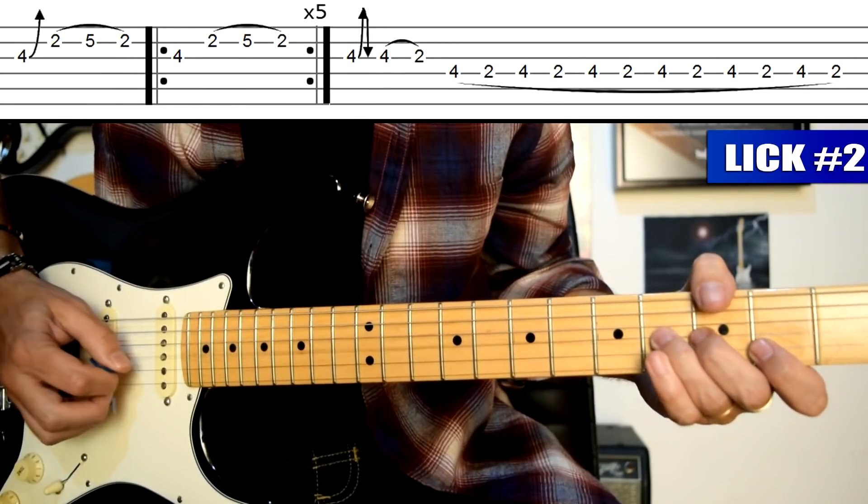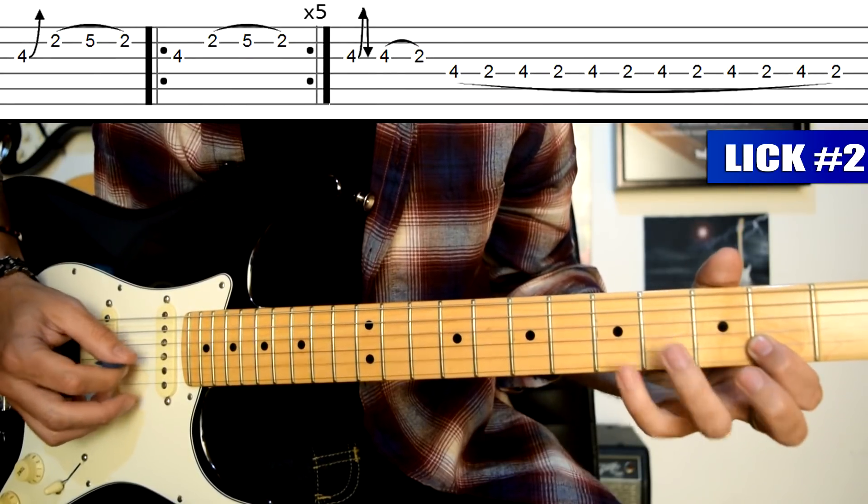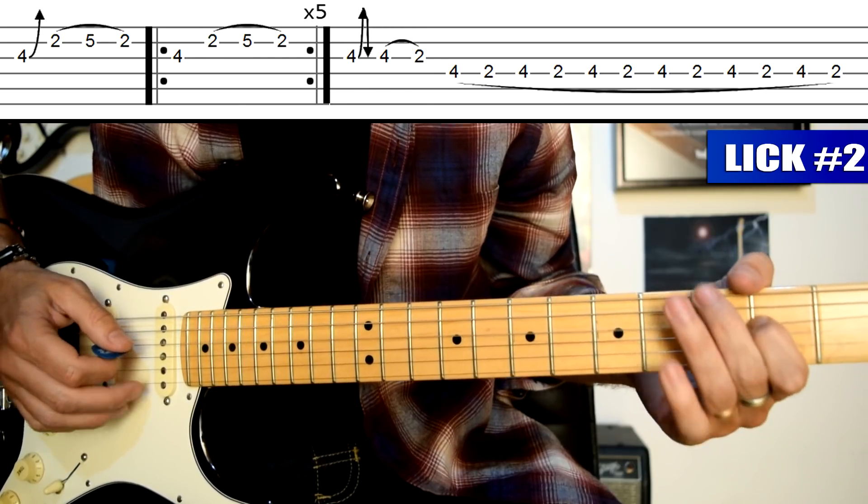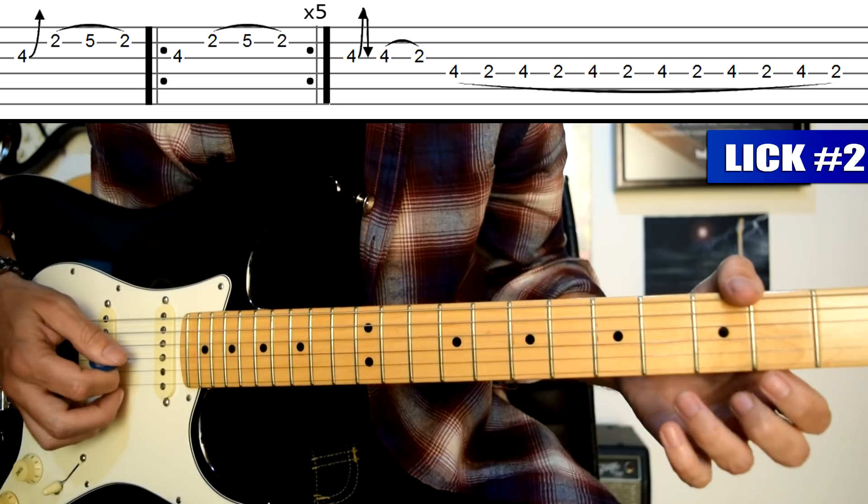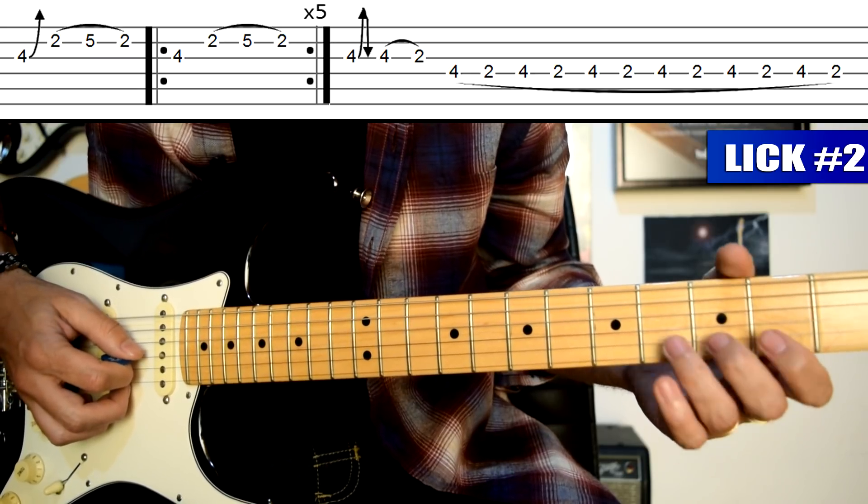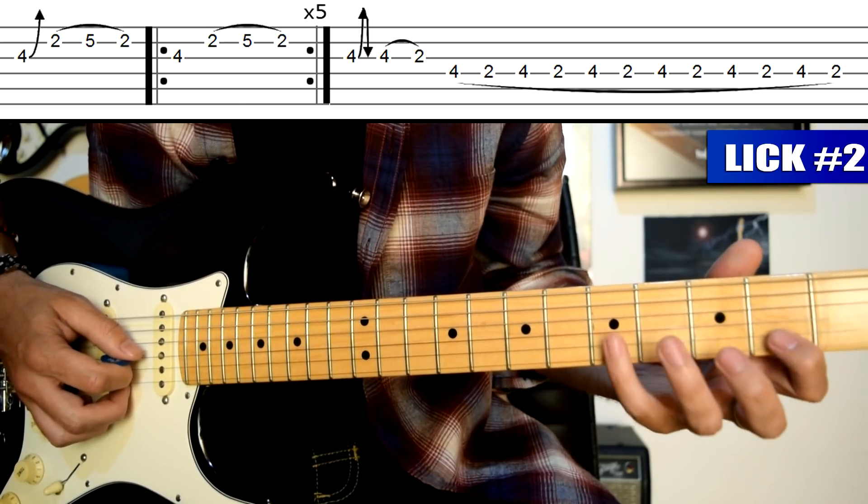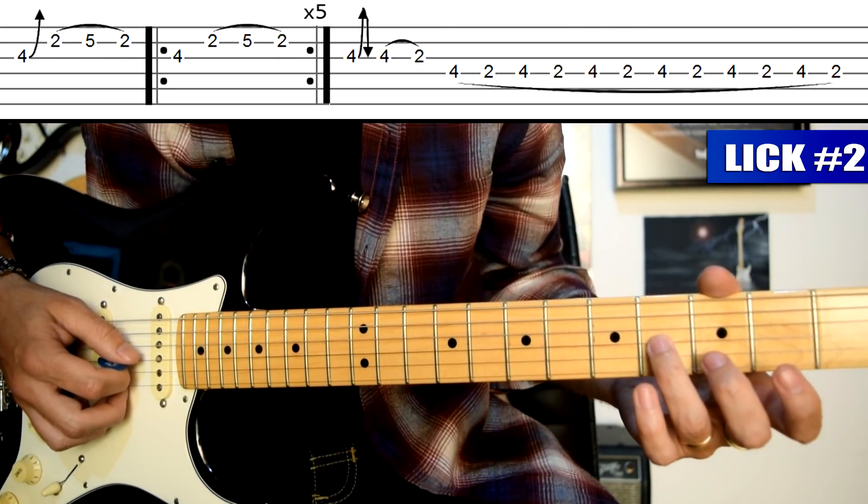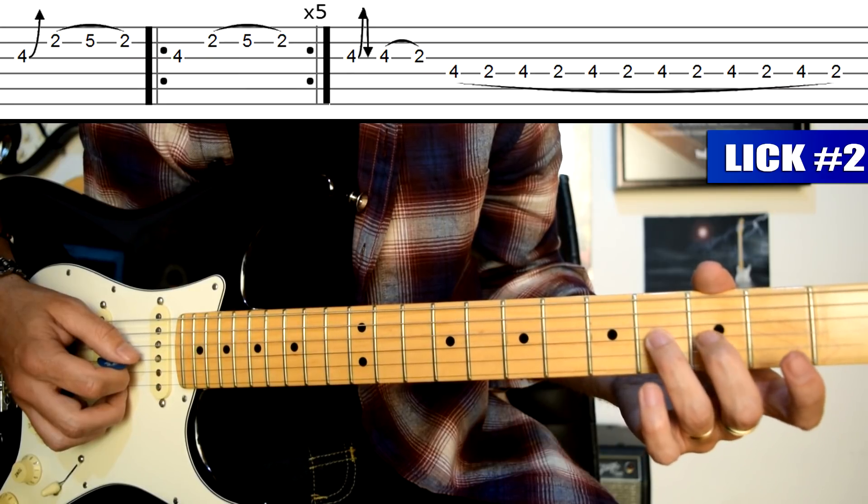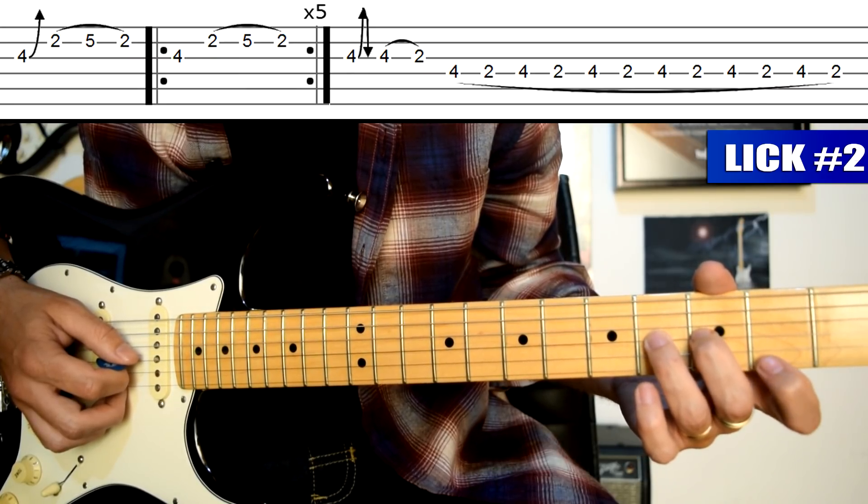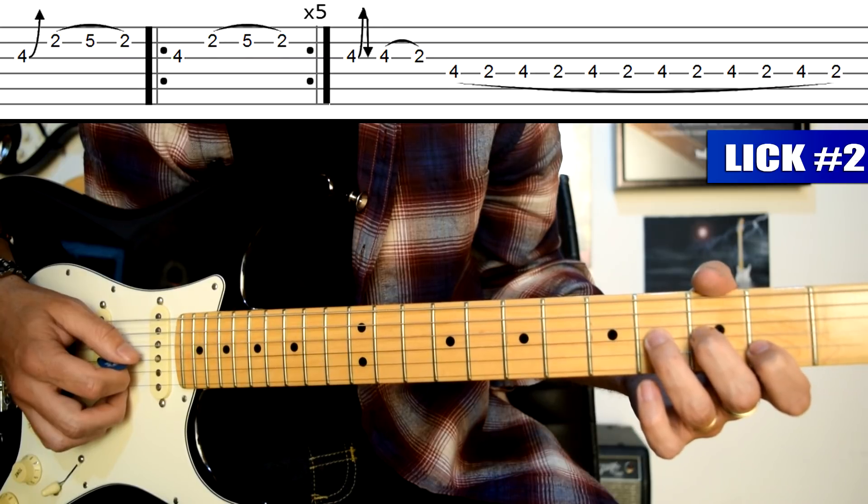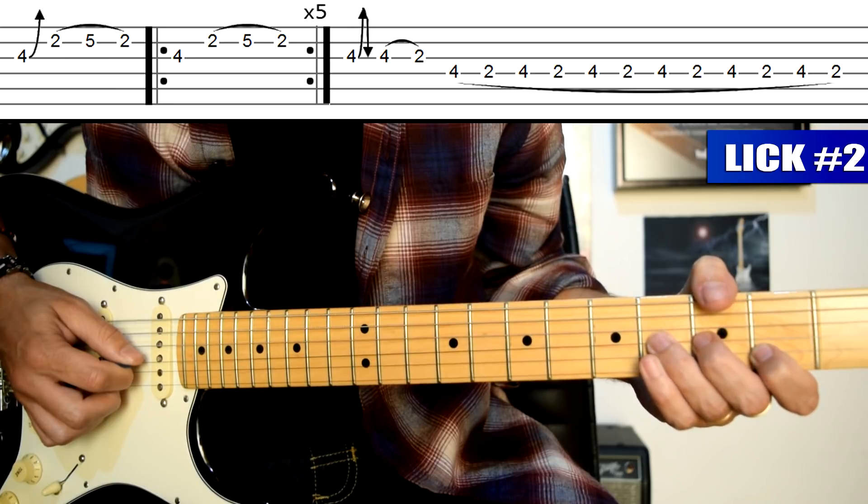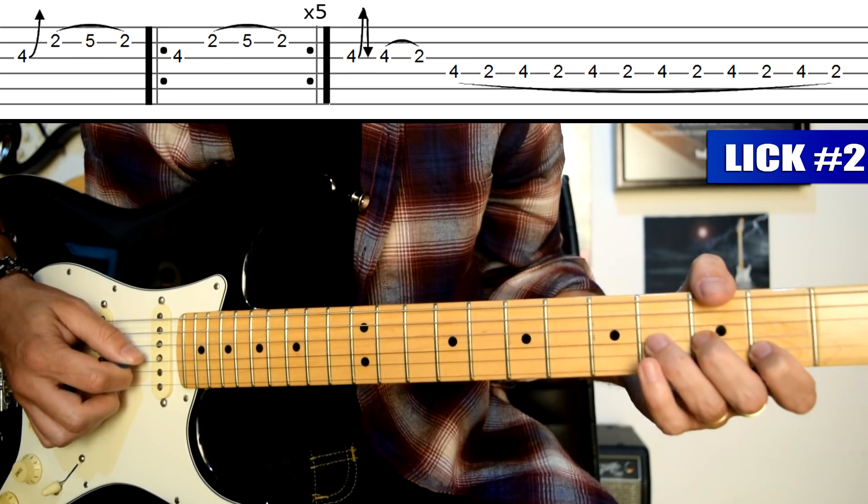Siguiente fraseo. Es un fraseo en la escala pentatónica menor de Fa sostenido también. Va a tener muchos ligados. Comenzamos con una estirada: dedo 3 traste 4 de cuerda 3, dedo 2 traste 3 de cuerda 3. Y vamos a poner el dedo 1 en el traste 2 de cuerda 2 para preparar la siguiente nota. Púa abajo en cuerda 3, estiramos hacia arriba con el dedo 3 y el dedo 2.